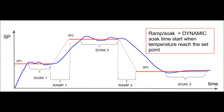In the dynamic execution, the soak time starts when the temperature reaches the setpoint, so it's a synchronous process. Here you can see that soak 2 starts immediately when the current temperature overcomes setpoint 2. These two methods allow you to manage different processes, including processes where the power is not able to follow your setpoint perfectly.